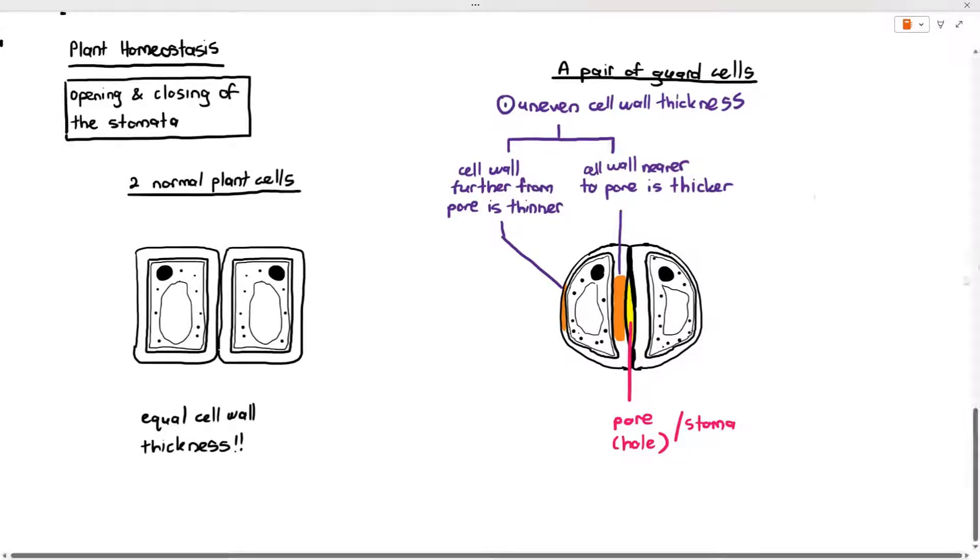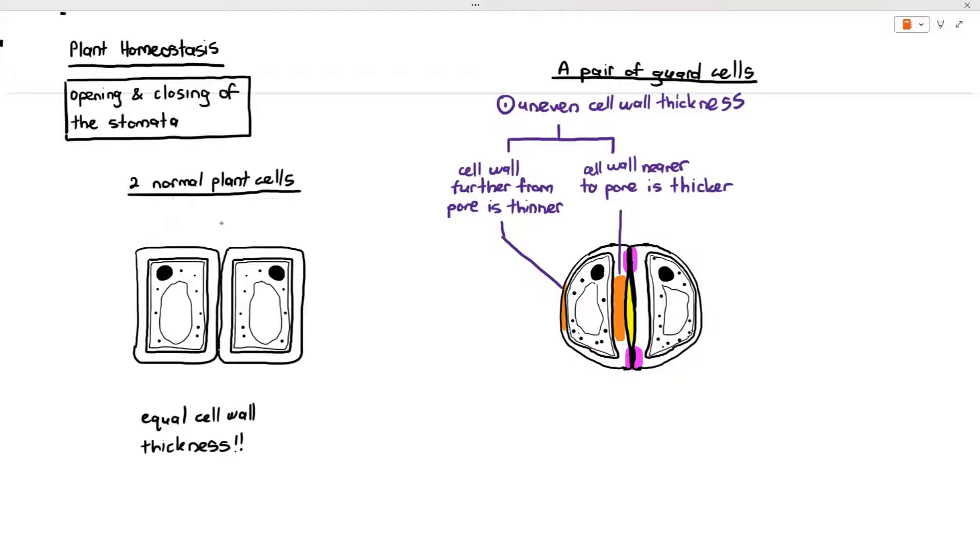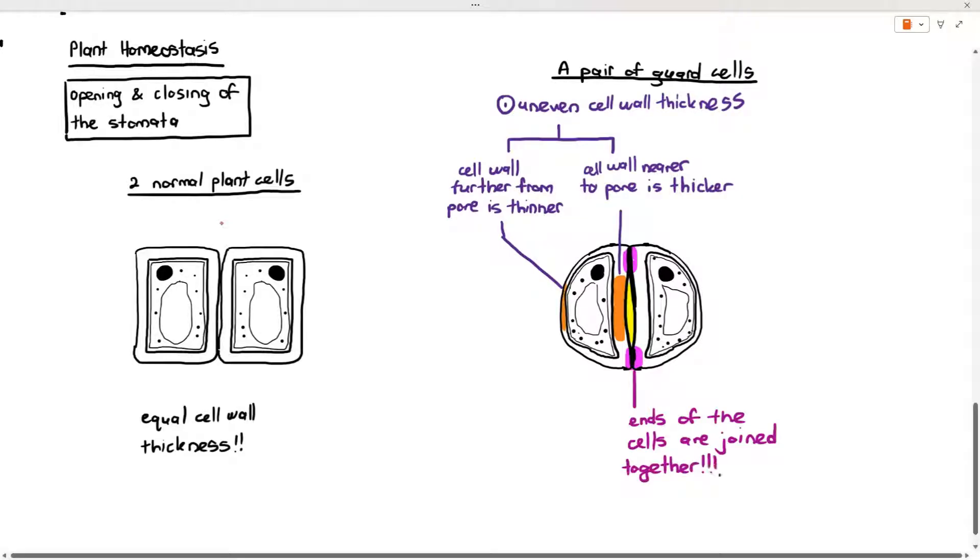The other important thing is the end of the cells, the cell wall where I've highlighted in pink. The end walls are actually joined together, they're kind of fused together, so that part cannot move as much even if it wanted to. Now these are the first two characteristics of the guard cells that you must know.